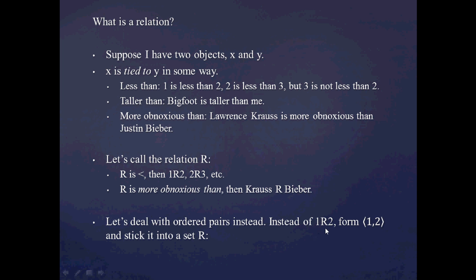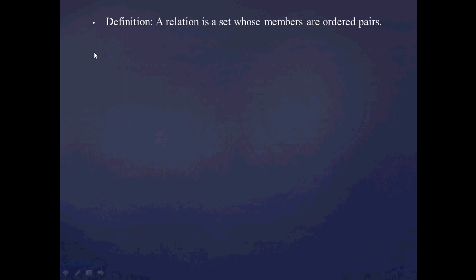Instead of 1R2, let's form the ordered pair (1, 2) and then stick it into some set R. So the relation R being 'less than' could be described perfectly well as a set containing the ordered pairs (1,2), (2,3), (3,4), (3,10), something like that. This set containing a bunch of ordered pairs is going to contain the same amount of information as what we're describing verbally. So we're now going to define a relation as a set whose members are ordered pairs, just as we did in the previous slide.